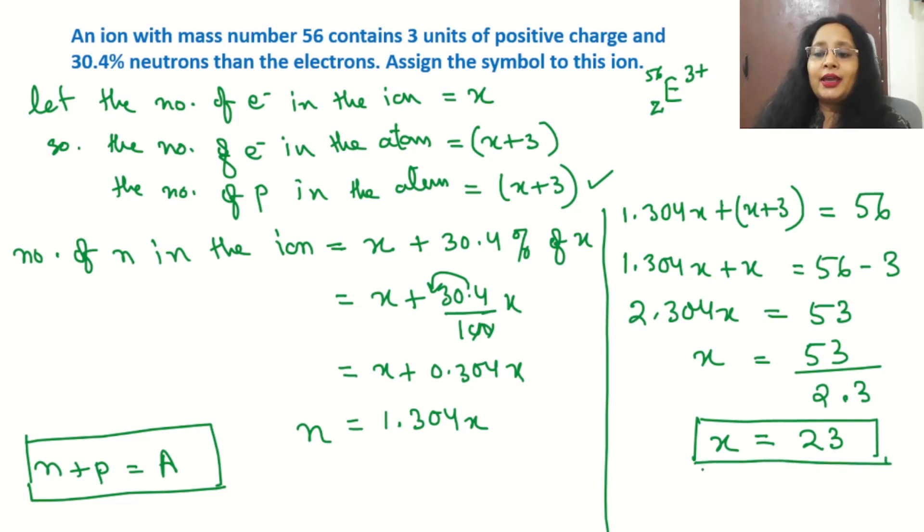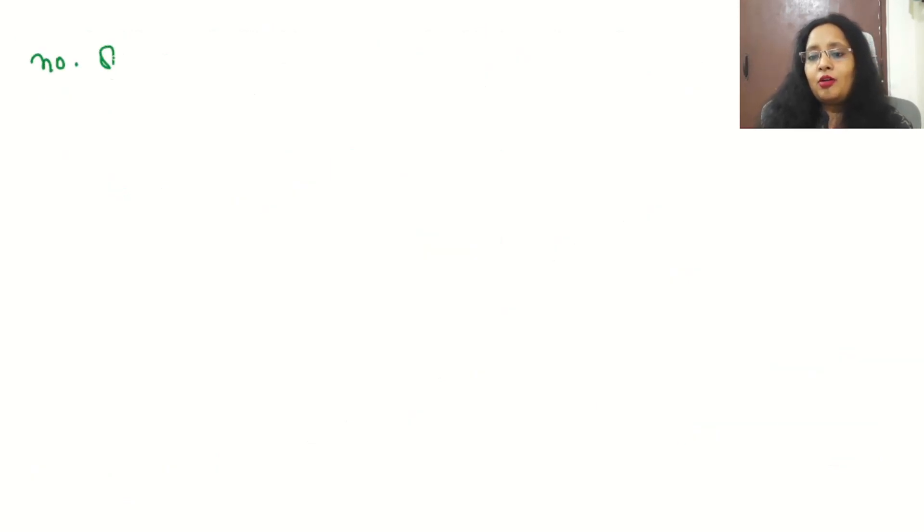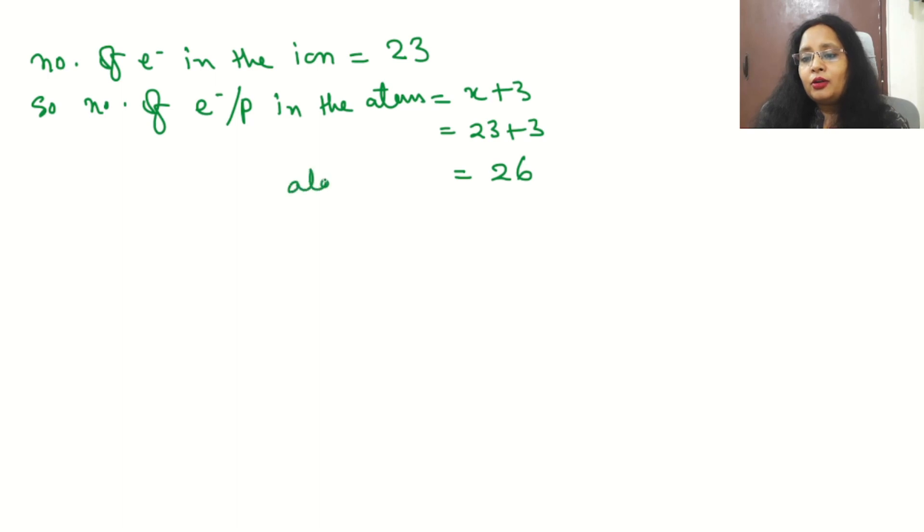Now this is x. We have some approximate value after decimal, we will ignore the exact value, we will take the rounded value here. This x is our number of electrons in the ion, so number of electrons in the ion is 23. So the number of electrons or protons in the atom, x plus 3, so this will be 23 plus 3 equals 26. And this is the number of protons or electrons in the atom, this is called atomic number, and this is denoted by z.